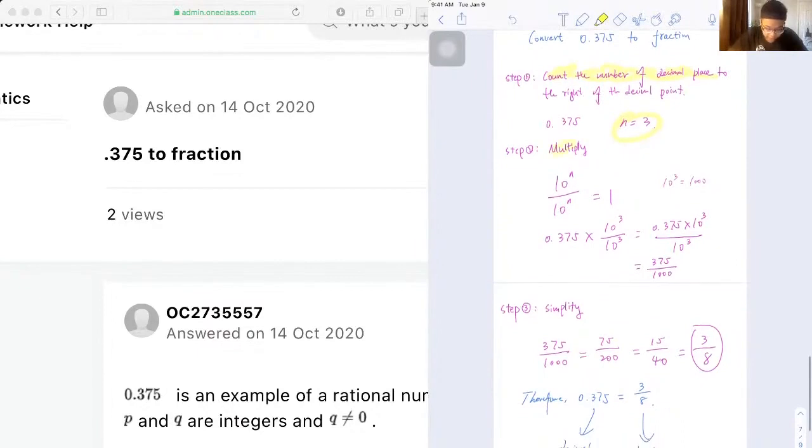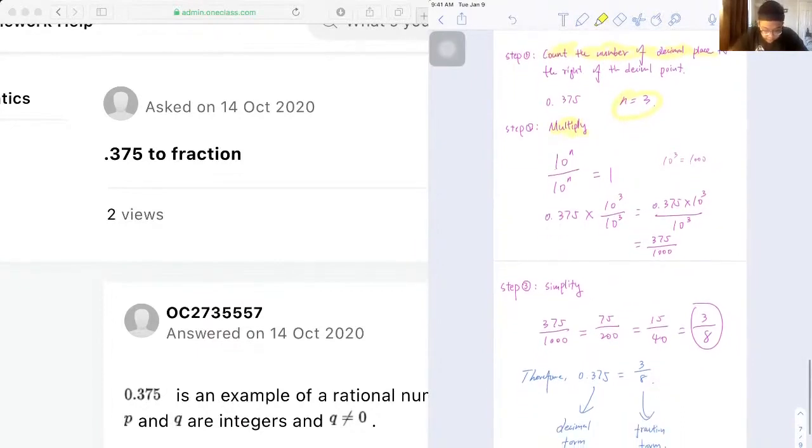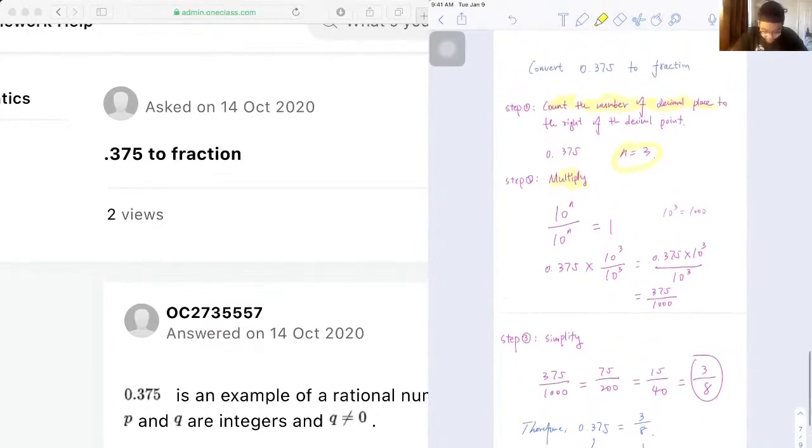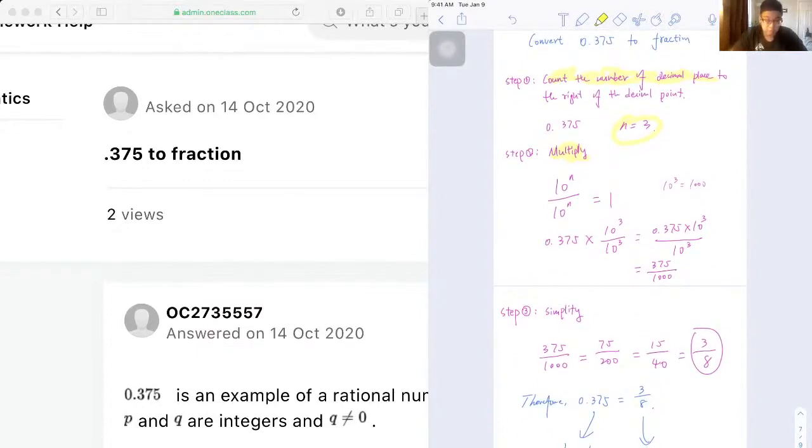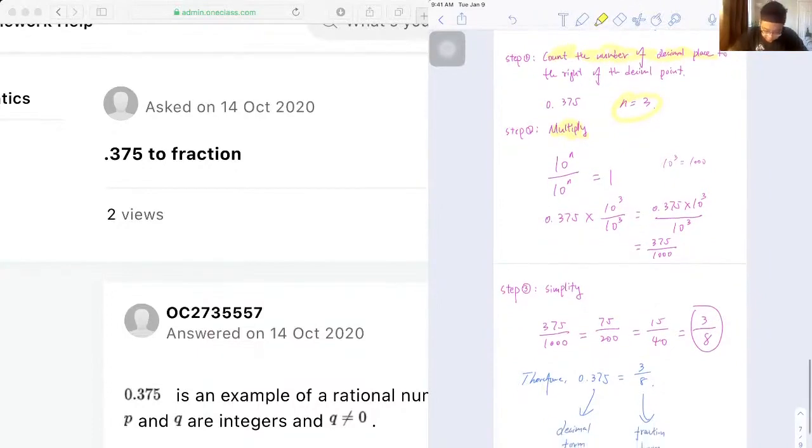And second, we need to multiply where we need to multiply the original value by 10 to the exponent of n over 10 to the exponent of n, where n is what we get from the first step.